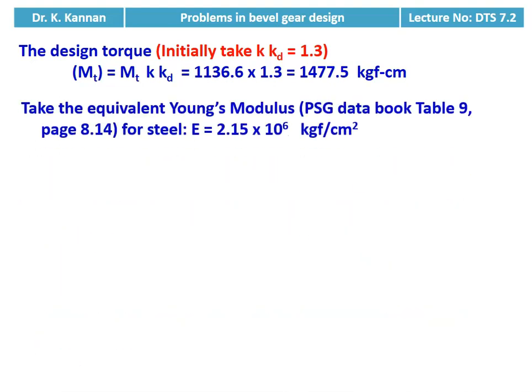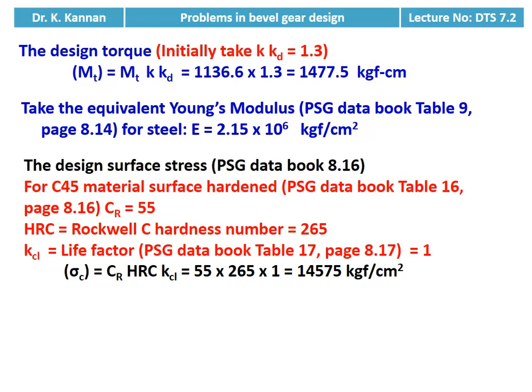We take the equivalent Young's modulus for steel from table number 9, page number 8.14: E = 2.15 × 10⁶ kilogram force per centimeter square. Then we calculate the design surface stress. For C45 material, surface hardened, from the table we take coefficient Cr = 55, HRC hardness number = 265, life factor KCL = 1 for 10,000 hours. So σC = Cr × HRC × KCL = 55 × 265 × 1 = 14,575 kilogram force per centimeter square.